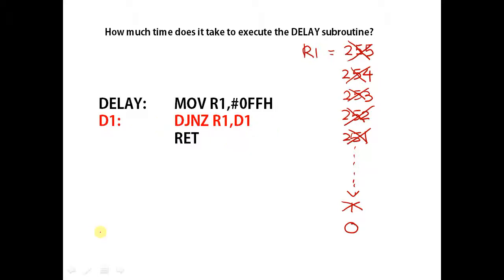How many times was the DJNZ instruction executed? It was executed a total of 255 times. The return instruction is executed one time.